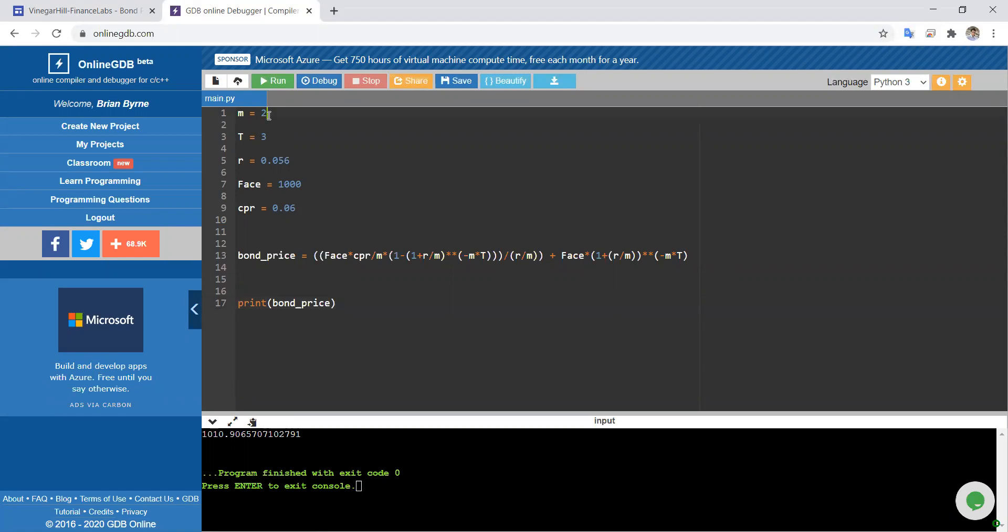This is using present value annuity. Let's run. We're expecting $1,010.91 and we get that here.